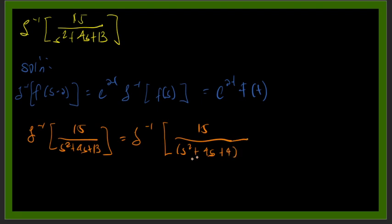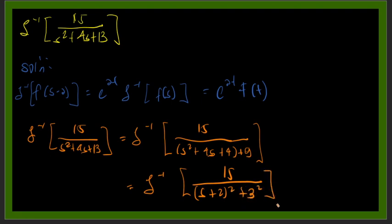So this 4 here that we add, we'll deduct it from the 13, so we have plus 13, we'll deduct the 4, so that will be 9. So we'll end up now with 15 over, so we'll need to factor out this one, so that is S plus 2 squared, then plus 3 squared.